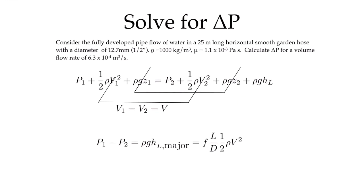Our first type of problem: solve for delta p given the flow rate. Consider a fully developed pipe flow of water in a 25-meter-long horizontal smooth garden hose. It has a diameter of 12.7 millimeters, which is close to a half-inch pipe. The density of water is 1000 kilograms per cubic meter, and the viscosity is 1.1 times 10 to the minus 3 pascal seconds. We are asked to calculate the delta p for a volume flow rate of 6.3 times 10 to the minus 4 cubic meters per second.